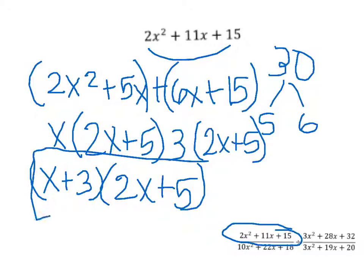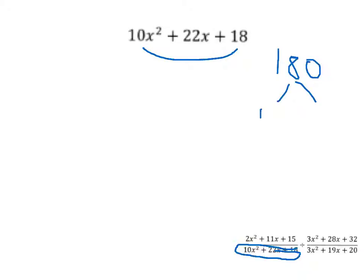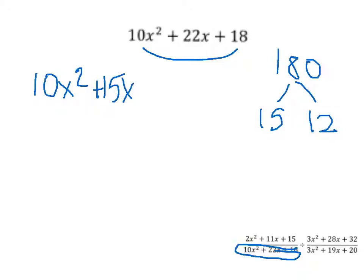This factored form takes place of the first numerator. Now for the denominator of the first fraction, you multiply 10 and 18 to get 180. The factor pair of 180 that works is 15 and 12. So you plug that back in to get 10x² + 15x + 12x + 18.